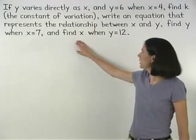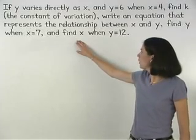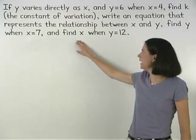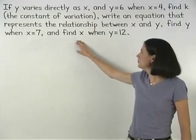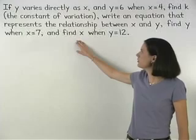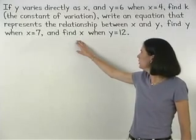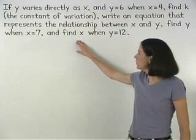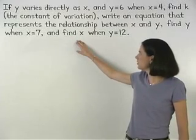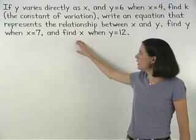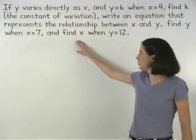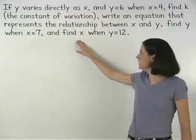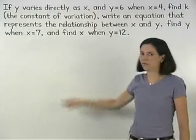If y varies directly as x and y equals 6 when x equals 4, find k, the constant of variation, write an equation that represents the relationship between x and y, find y when x equals 7, and find x when y equals 12.